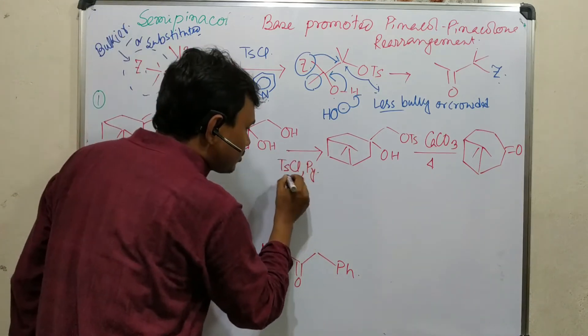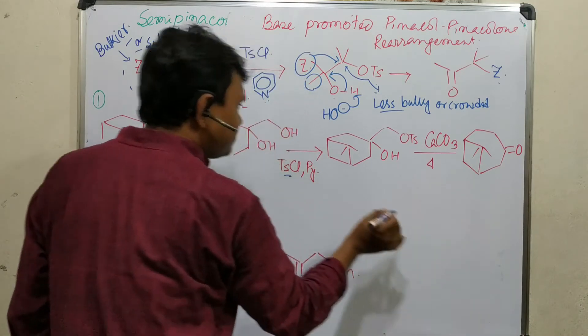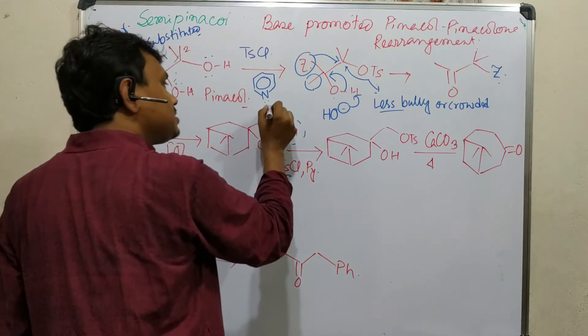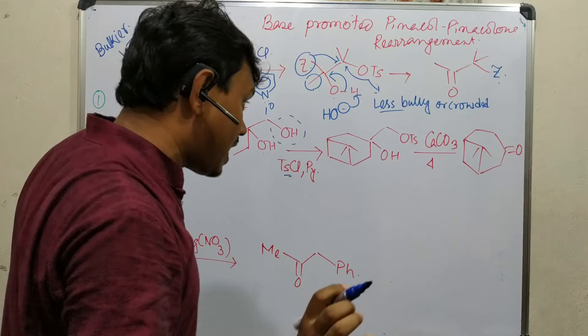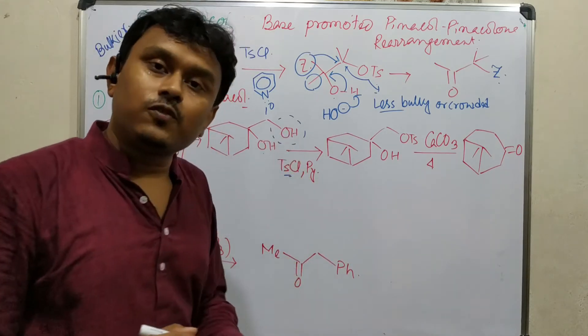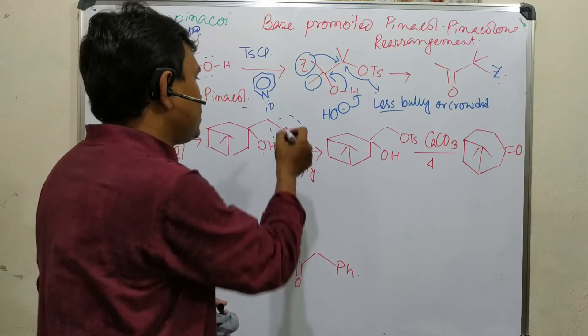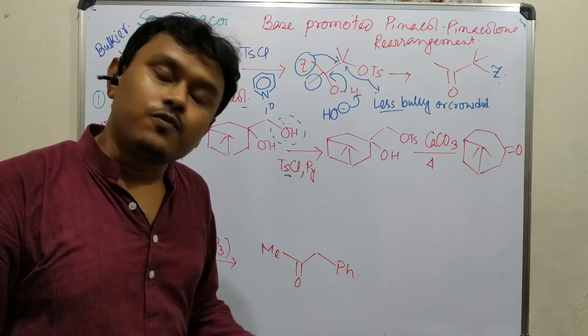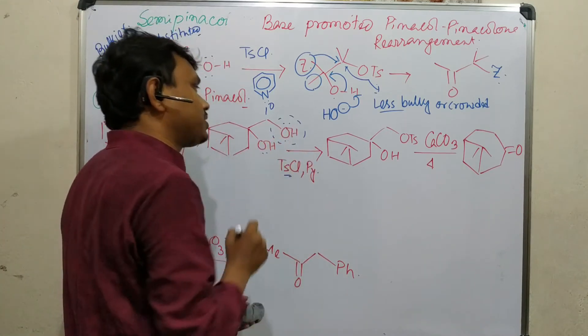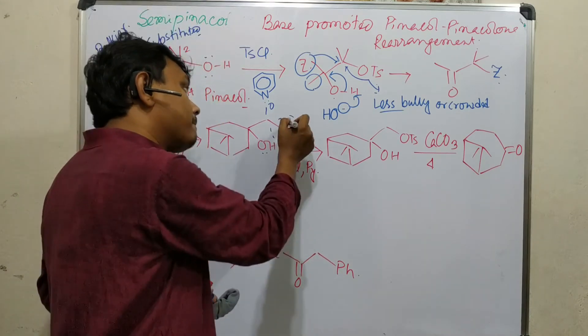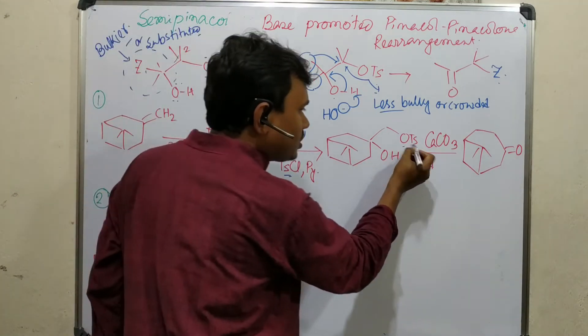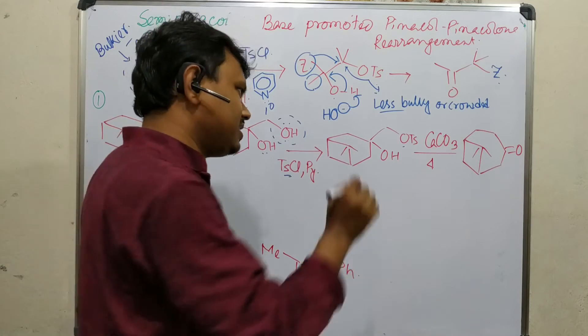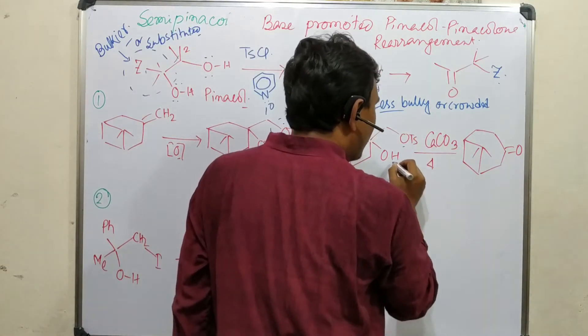Oxidized means we know that KMnO4, osmium tetroxide, such reagents are efficient for dihydroxylation - addition of dihydroxyl group to this. After that, if we react with tosyl chloride, selectively tosylation will happen on this because this is less bulky, this is primary although this is tertiary.